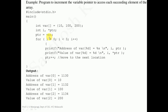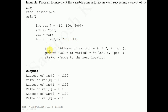Assume that the array base address is 1130 and also assume the size of integer type as 2 bytes. Here ptr equals var, so the base address of the array will be assigned to the pointer variable ptr. Then we will use a for loop. In the for loop we start from i equal to 0, condition i less than 3 (since there are 3 elements), and i plus plus. So this for loop is going to be repeated for each element of the array - 3 times. Inside the for loop we are printing the address and also the value.